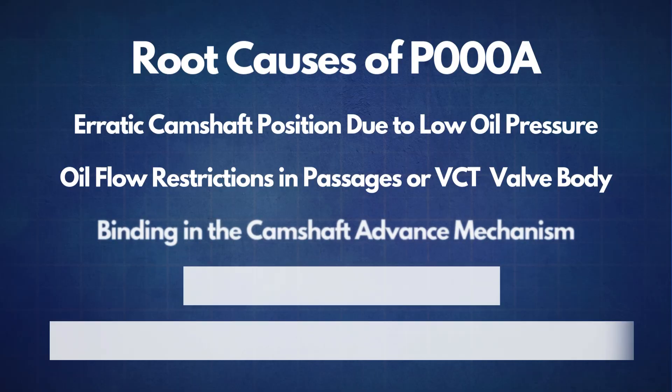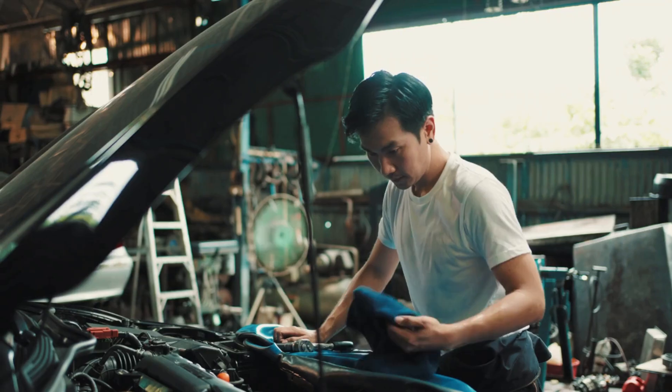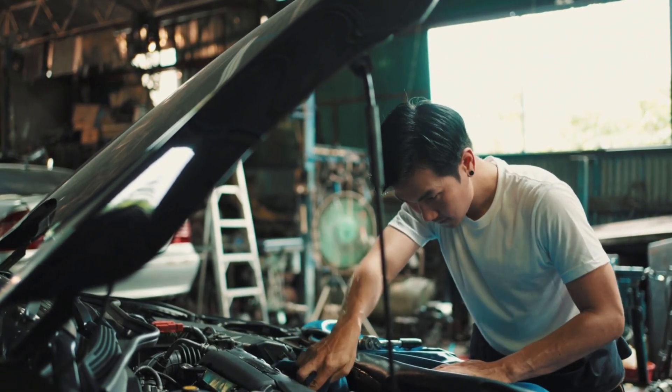The third cause is binding in the camshaft advance mechanism. If the VCT unit is binding, it may prevent the camshaft from advancing or retarding as it should, which could trigger the P000A code.